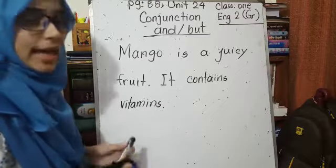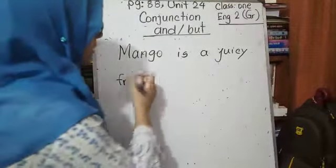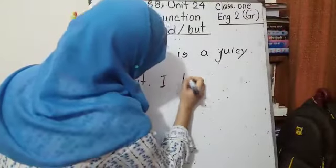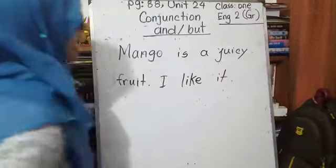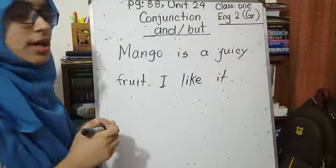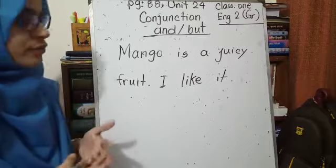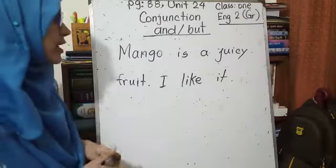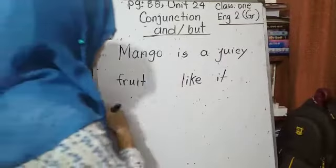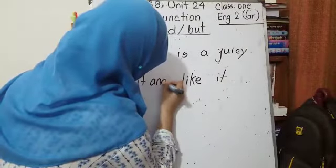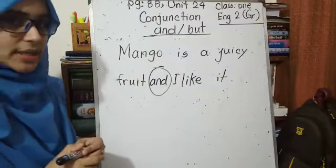Mango is a juicy fruit — it includes vitamins. So you can say: mango is a juicy fruit and I like it. As mango is a juicy fruit, a tasty fruit, a sweet fruit, that's why you like it. So: mango is a juicy fruit and I like it. Here we will use the conjunction 'and'. I hope it's clear.